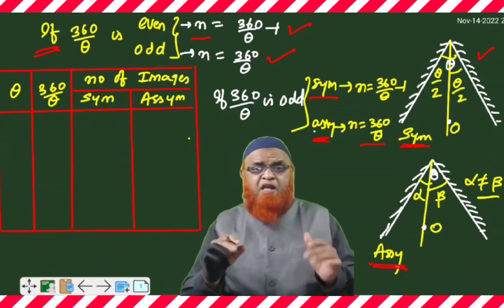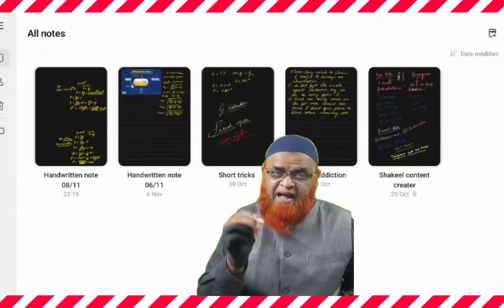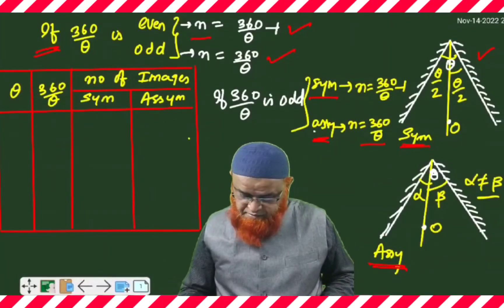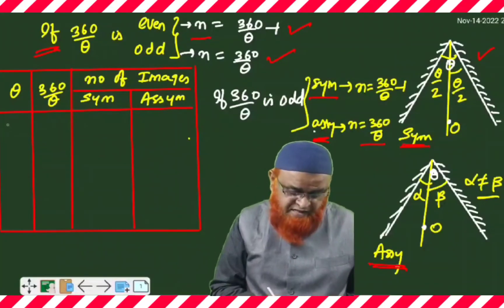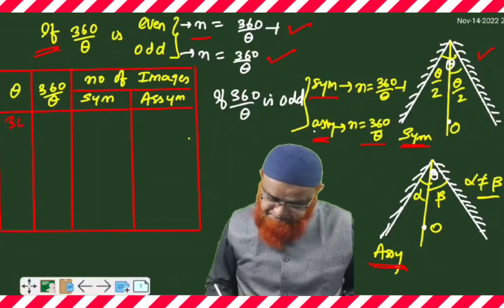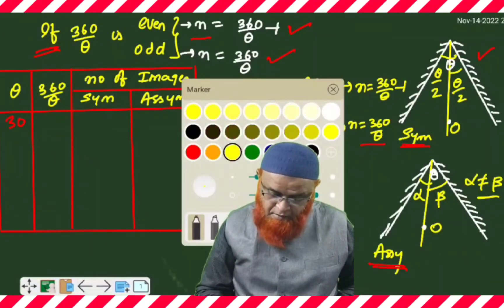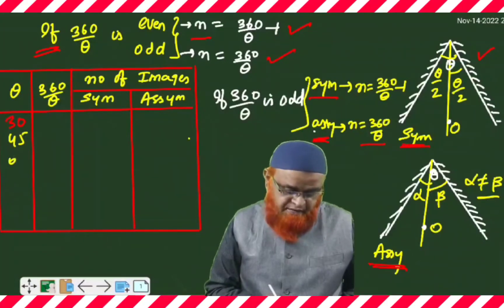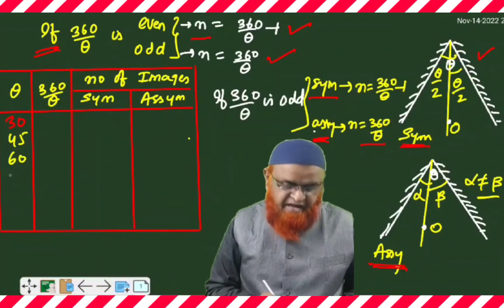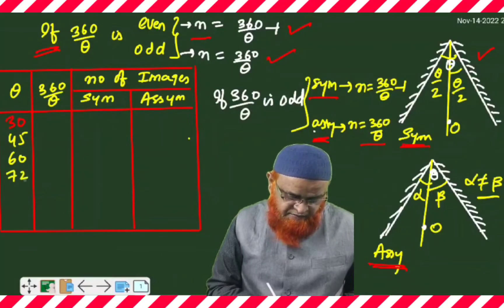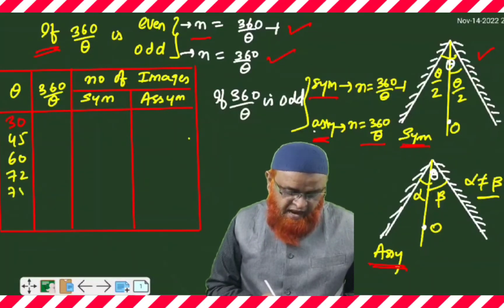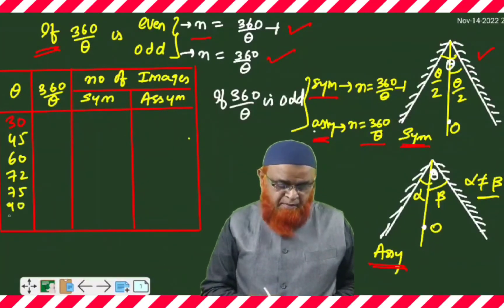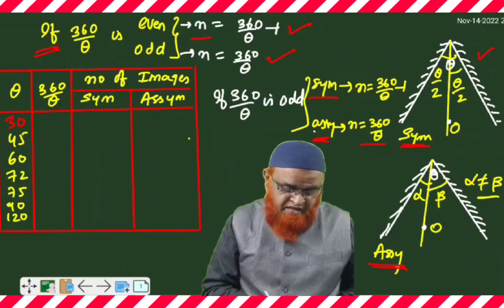You may have understood about 50% so far; the remaining will become clear in the tabular column. Let us take the angles: 30 degrees, 45 degrees, 60 degrees, 72 degrees, 75 degrees, 90 degrees, 120 degrees, and 180 degrees.